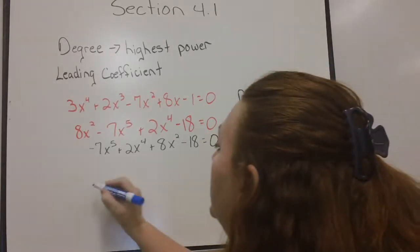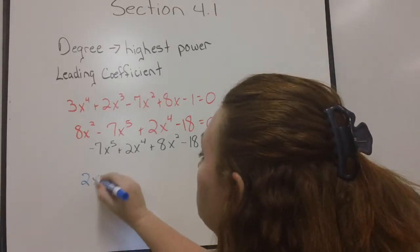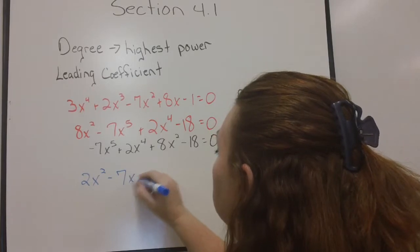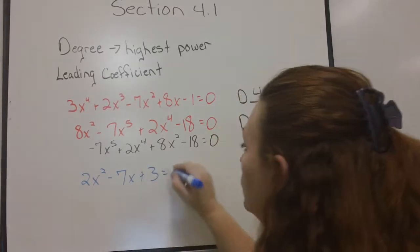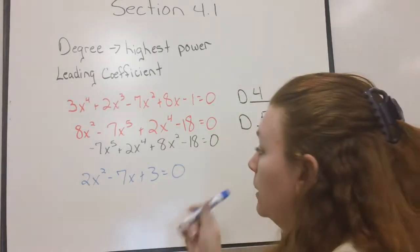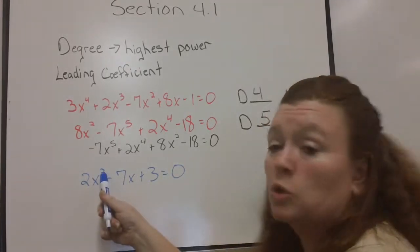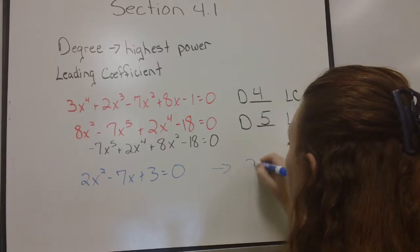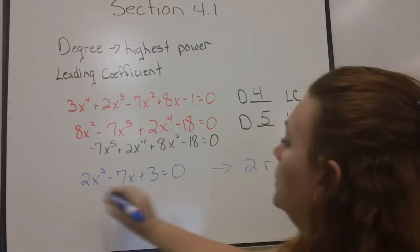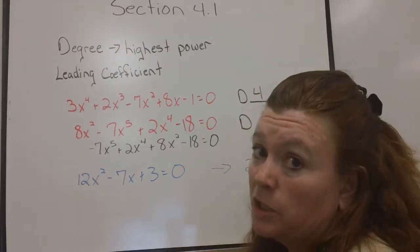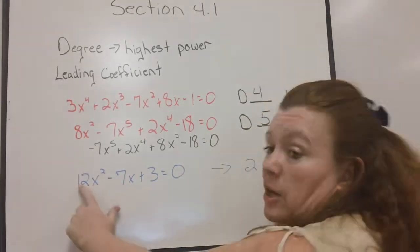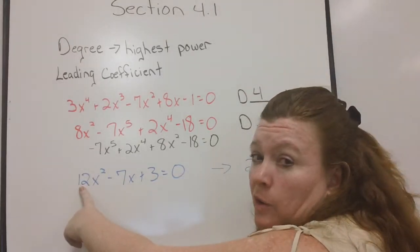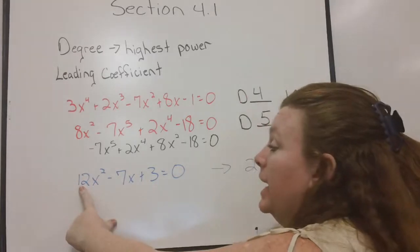So, for example, if I have something like this, what is the highest power? It says squared. So, that means there will be two roots. You know what? I'm going to switch that to a 12 because I don't want you to confuse which two I'm referring to. I don't care about this number. That is my leading coefficient, but that's not what I asked.